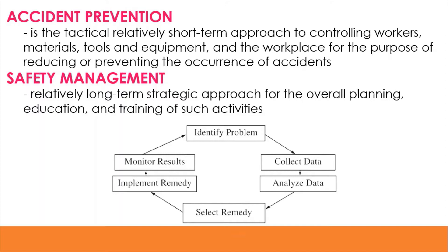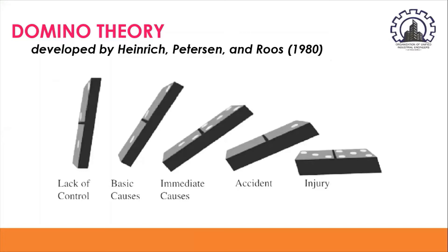In identifying the problem, it is important to understand theories of accident causation. One theory developed by Heinrich, Peterson, and Drews in 1980 is the Domino Theory. Like dominoes in a chain reaction where once the first falls the rest follow, in the Domino Theory, when one factor that could cause an accident fails to be prevented, every other factor falls continuously, resulting in injury — the last domino.